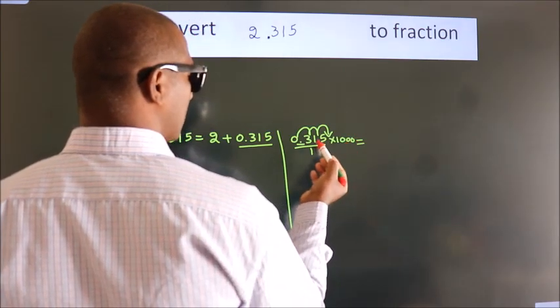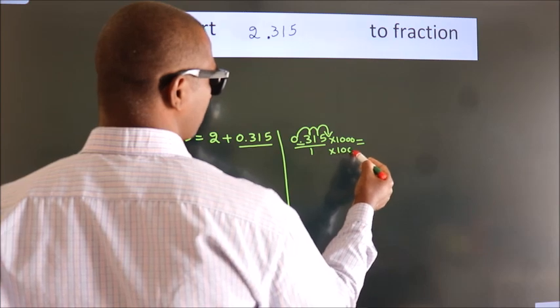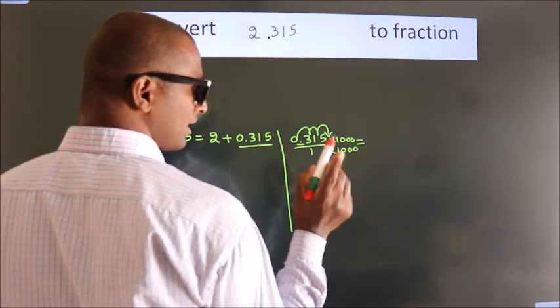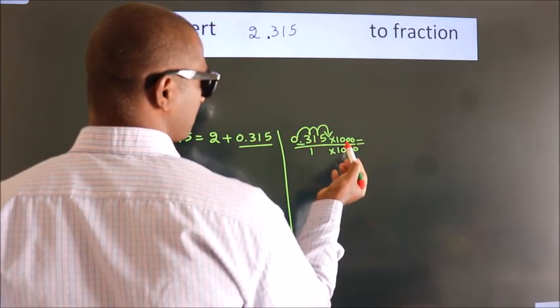Whatever number you are multiplying in the numerator, in the denominator also do the same. Next, 0.315 into 1000.